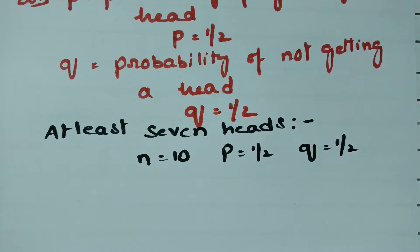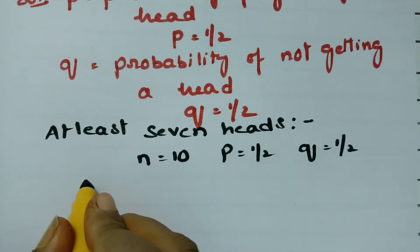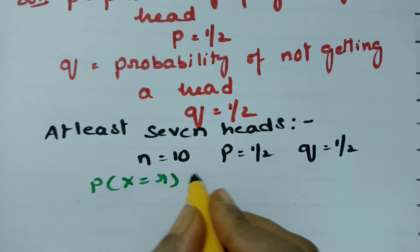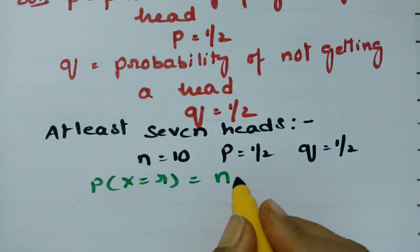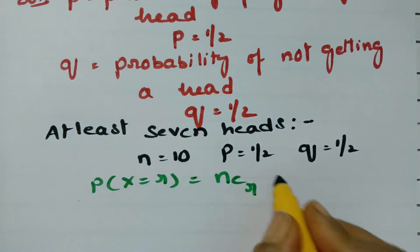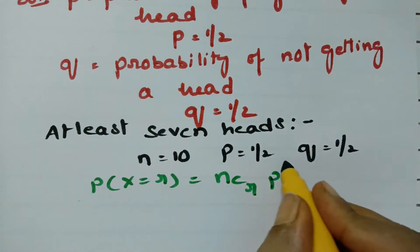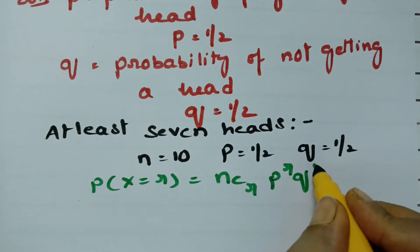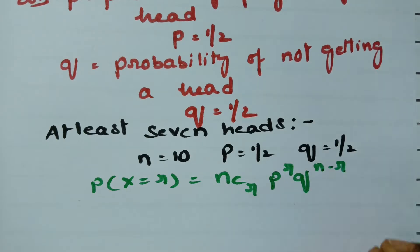According to the binomial distribution, we have the formula: the probability of X equal to R is equal to NCR times P power R times Q power N minus R. Using this binomial distribution formula, we are going to calculate.